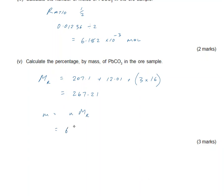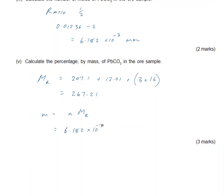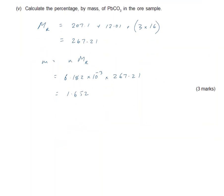That's 6.182 times 10 to the power minus 3 times 267.21. The mass we had in the sample was 1.652. Now the sample, if you go back to the question, was 3.15 grams, so 1.652 divided by 3.15, times 100 to make it a percentage. That gives us a percentage mass of 52.4%, and that's expressed in three sig figures.